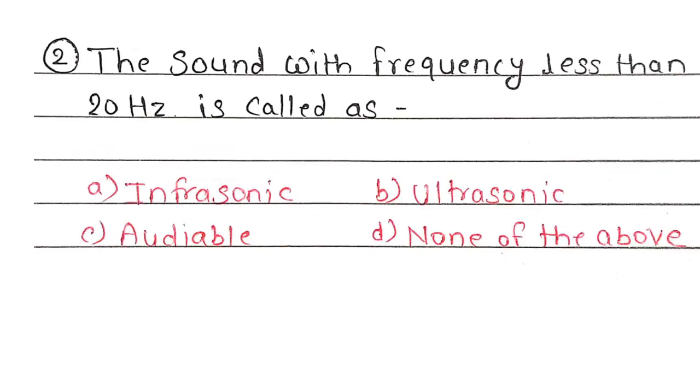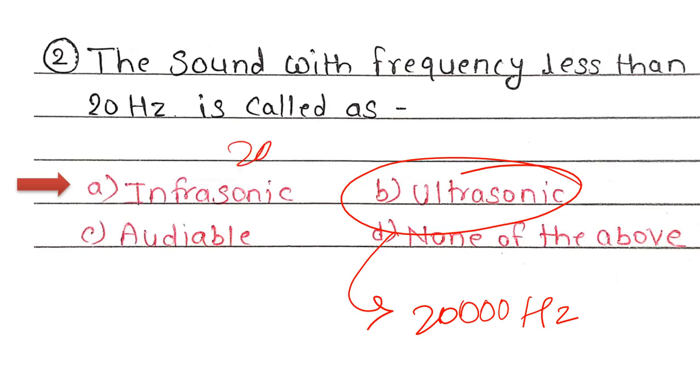Second question: The sound with frequency less than 20 Hz is called as? Correct answer, Option A, Infrasonic sound. The sound with frequency less than 20,000 Hz is called as audible sound. Generally, upon just human being, he fokta audible range madil sound aiku shakto.